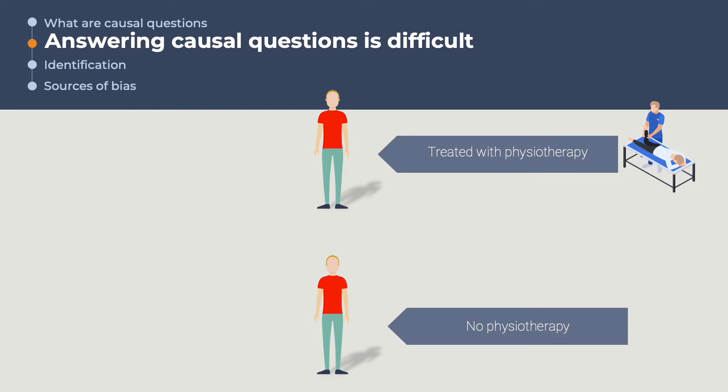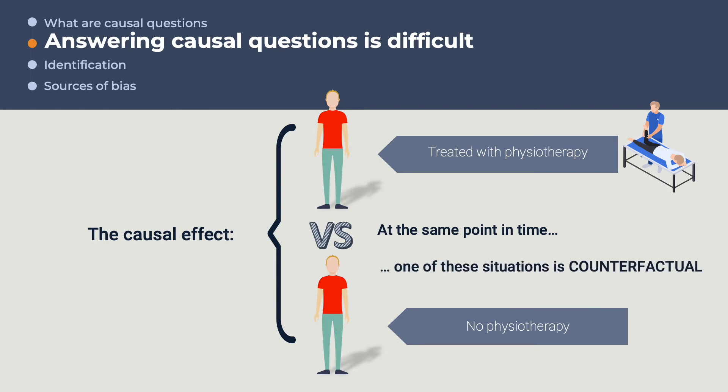That is, the effect of physiotherapy on Ray's knee is a comparison at the same point in time of Ray's recovery without physiotherapy, and Ray's recovery with physiotherapy. The problem, of course, is that at any given point in time, we can only observe one of both situations. Either Ray's knee has undergone physio, or it has not. The state of the world we cannot observe is said to be a counterfactual.